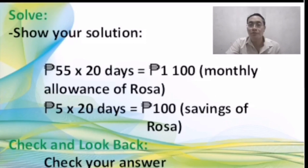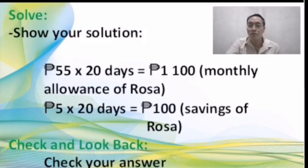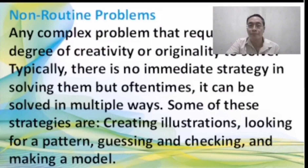So 55 times 20 equals 1,100 pesos — that is Rosa's monthly allowance. And for her savings, 5 times 20 equals 100 pesos. Check and look back to verify your answer is correct.